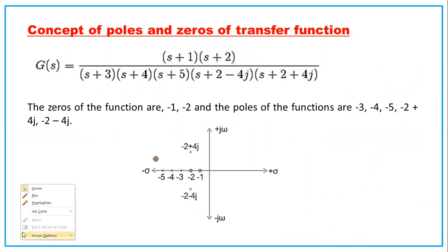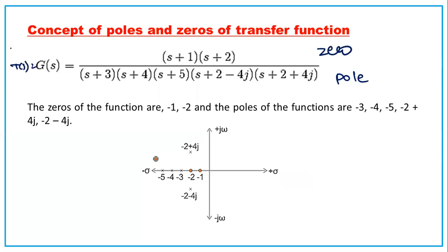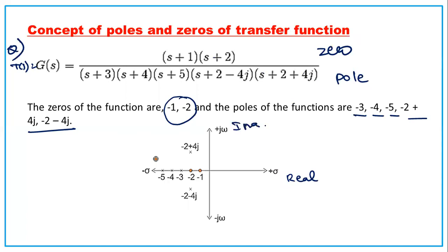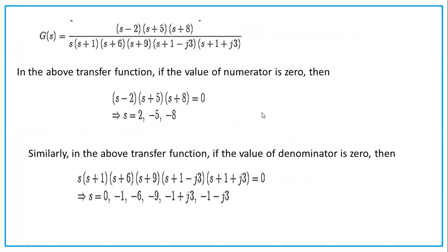For poles and zeros: consider the transfer function (s+1)(s+2) / [(s+3)(s+4)(s+5)(s²+4s+5)]. The zeros are s = −1 and s = −2. The poles are s = −3, −4, −5, and the complex poles s = −2 ± j. These are plotted on the real-imaginary s-plane.